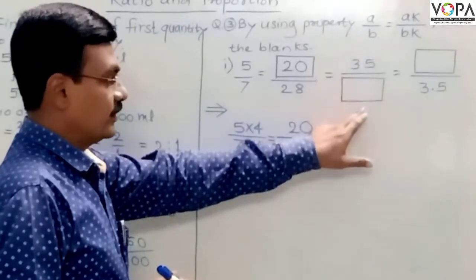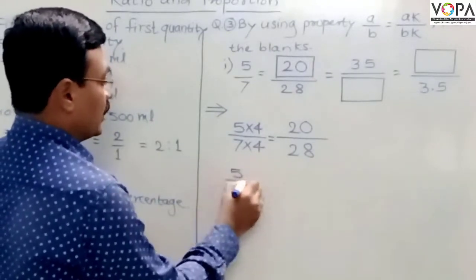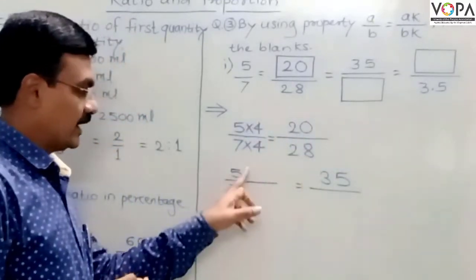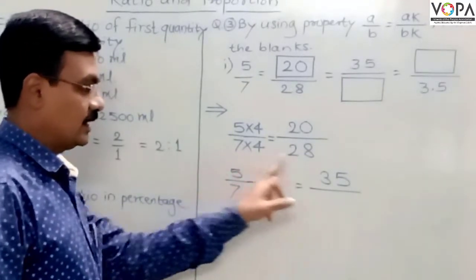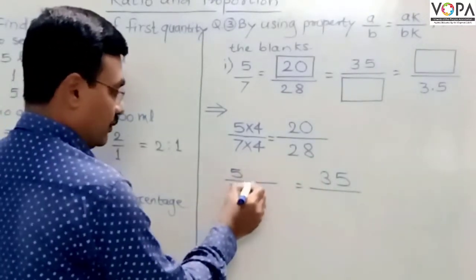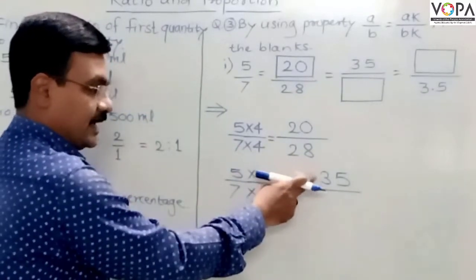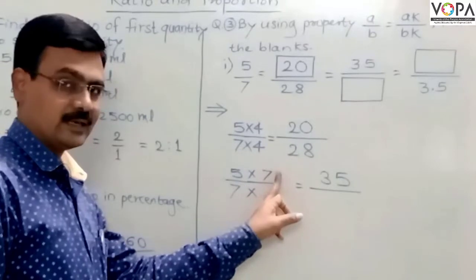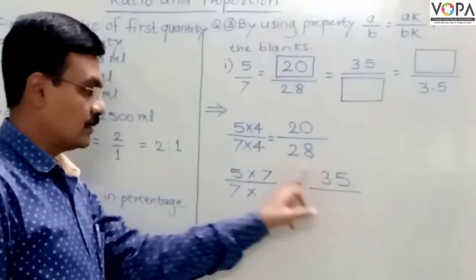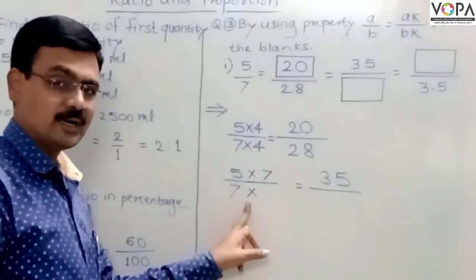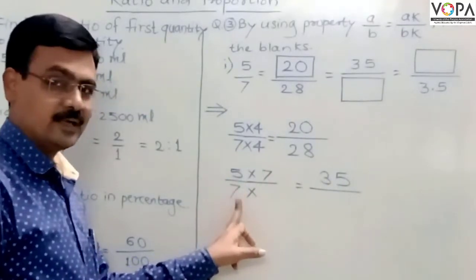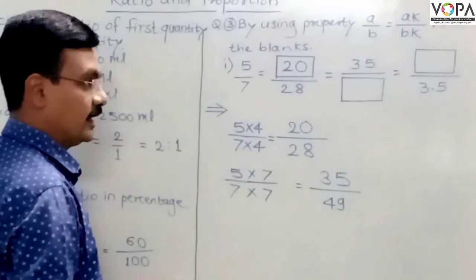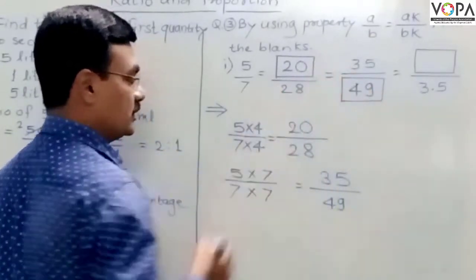Now, another ratio to find: 5/7 equals 35 upon what? To write that ratio, we need to decide a suitable non-zero number. If 5 is multiplied by 7, the product is 35. So we must also multiply the denominator by the same non-zero number: 7 multiplied by 7 is 49. The required number in the box is 49.